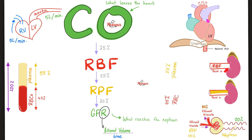Where does the kidney get its blood supply? From the renal artery. Where do we get that blood? From the heart, of course — from the left ventricle, then the aorta, then the abdominal aorta, then the renal artery with its renal blood flow. We only care about the plasma because normal kidneys should not let red blood cells through, so we just want the renal plasma flow. The renal plasma flow is 55% of the renal blood flow.